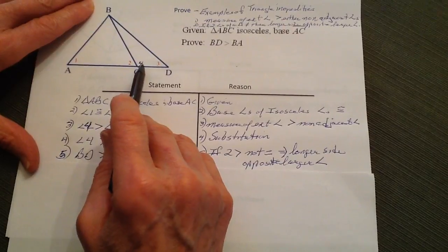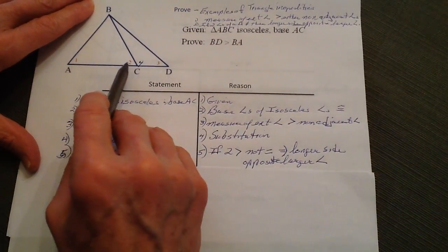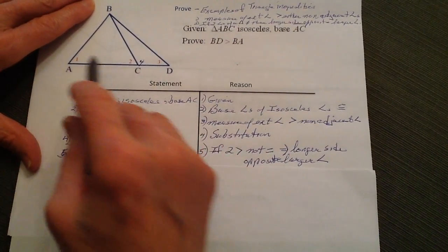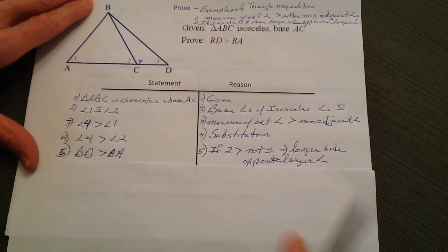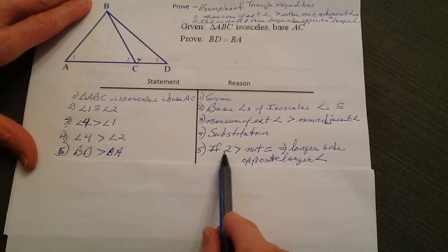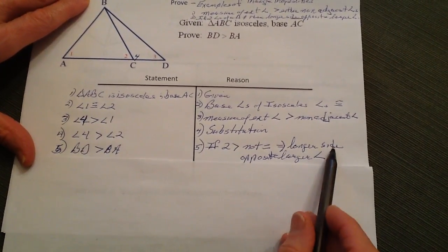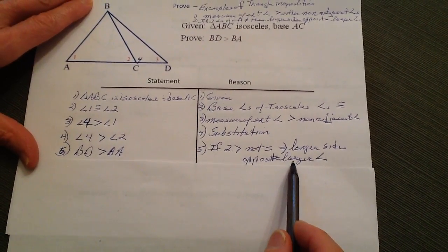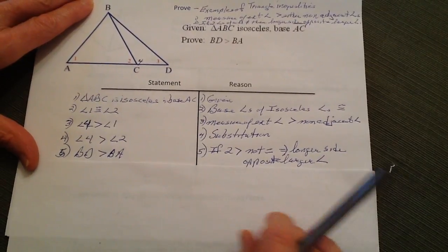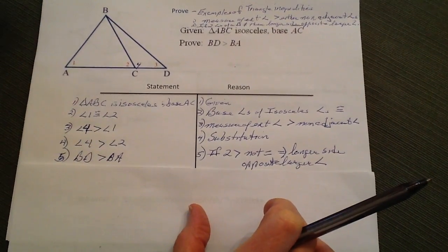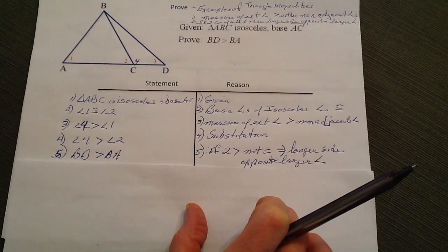And that angle is larger than angle two, and the side opposite angle two is BA. And therefore we have proved that because if two angles are not equal, then the longer side is opposite the larger angle. That gives us a little bit of information about proofs for triangle inequalities.